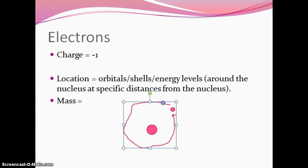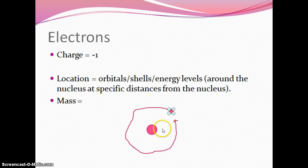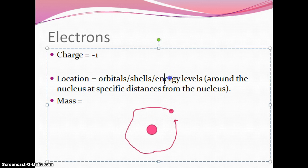Really, electrons aren't going around in a perfect circle because they're three-dimensional — they can be coming towards you, going away from you, up, down, sideways in all directions. The important thing is they're always a certain distance away from the nucleus, and that's why we call them energy levels.